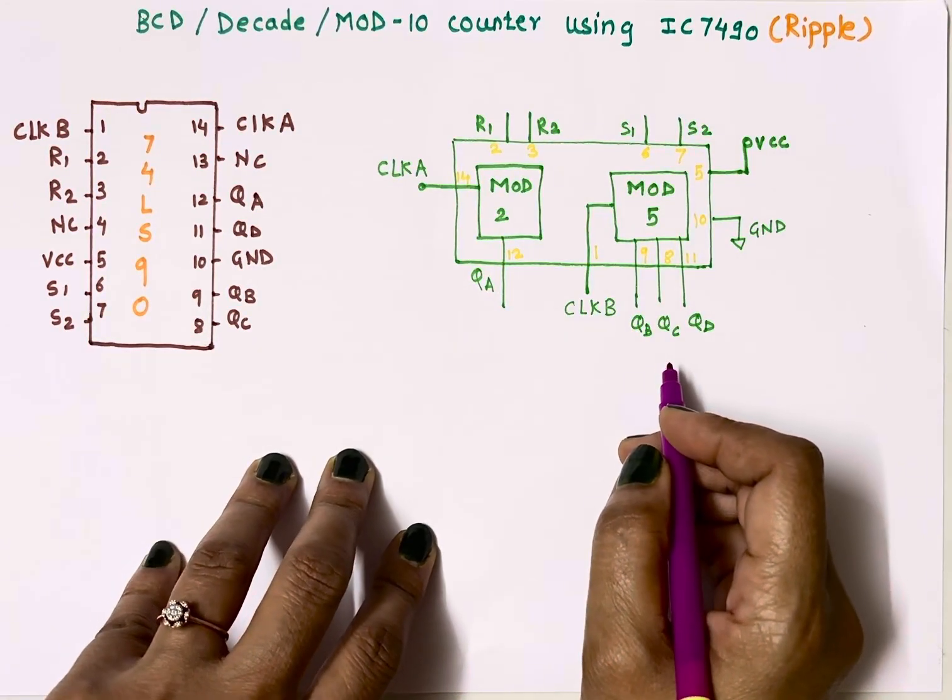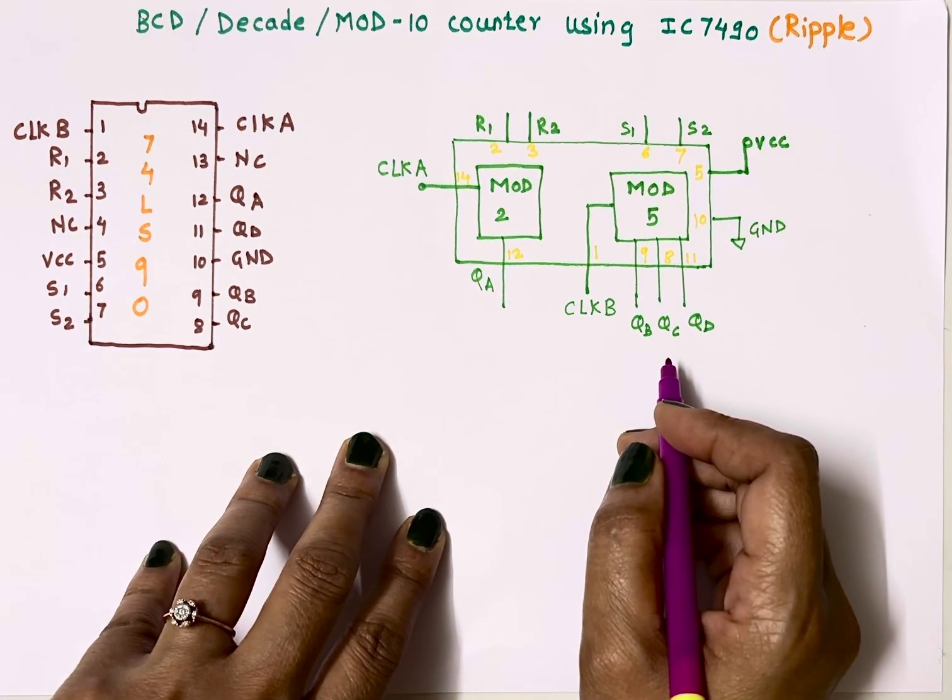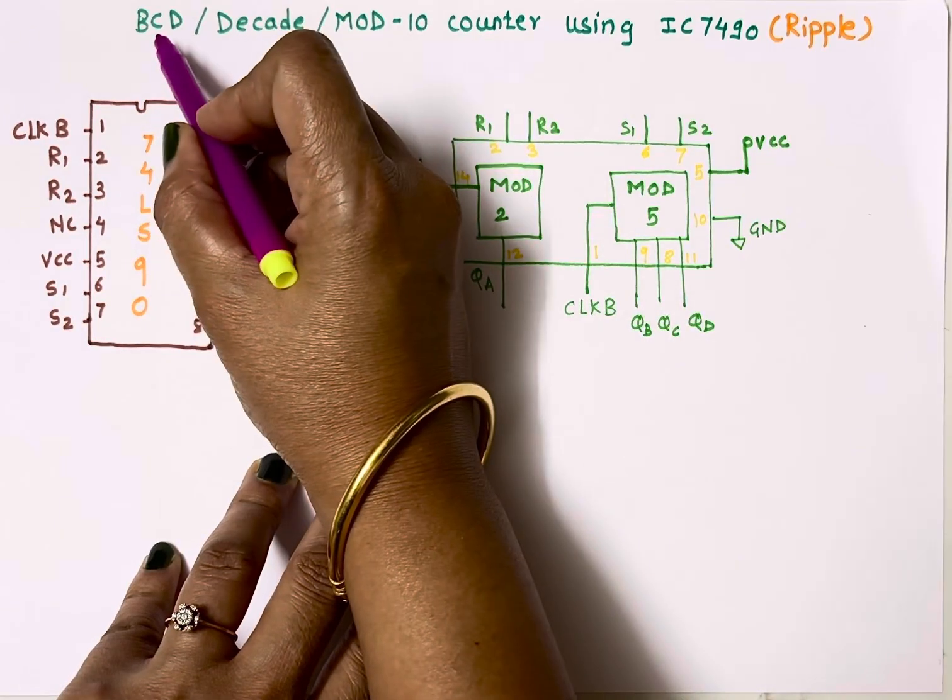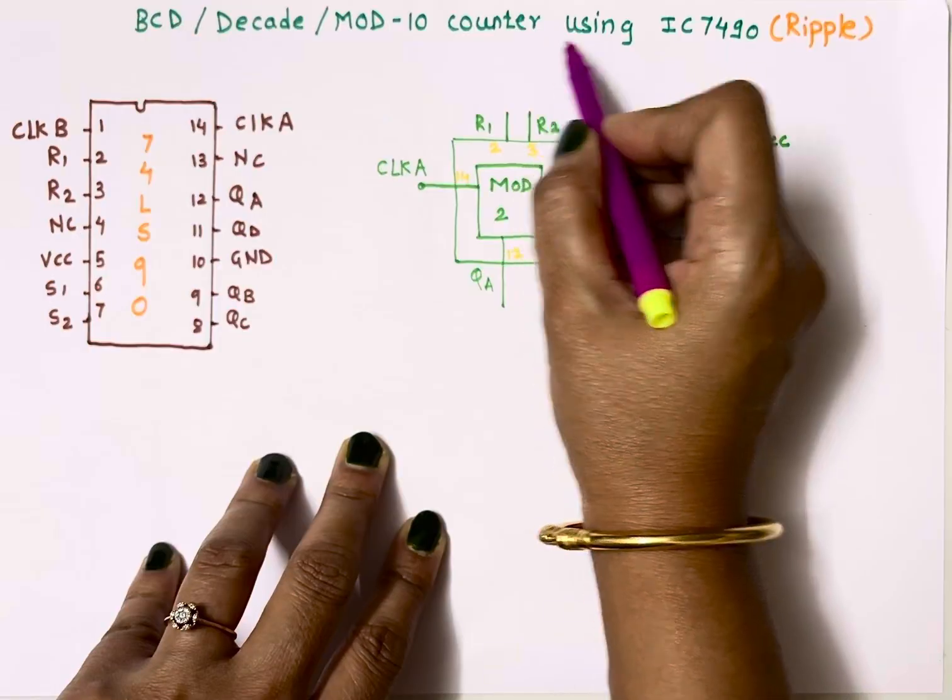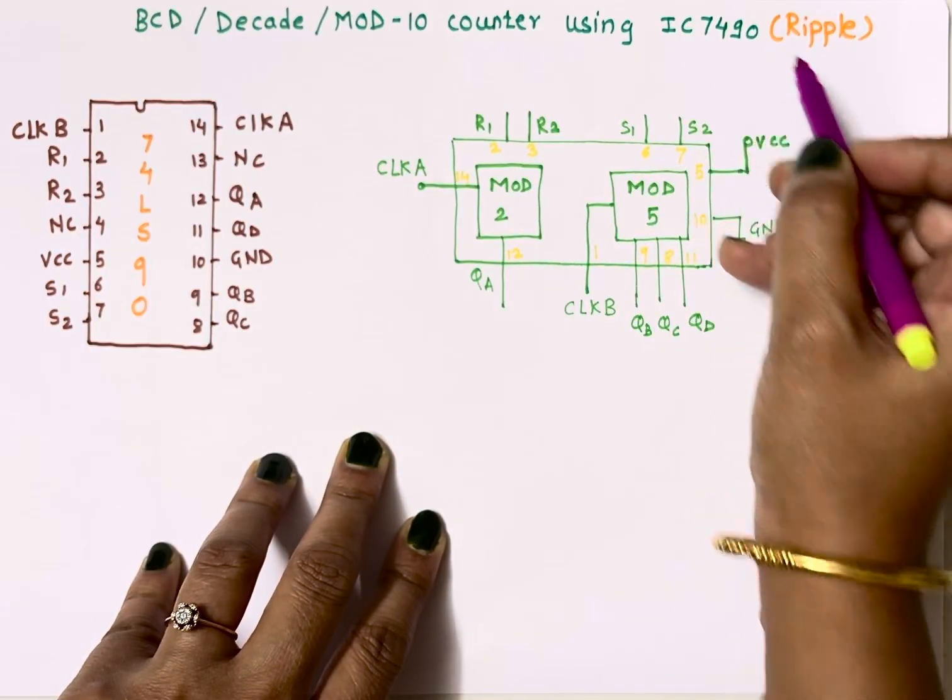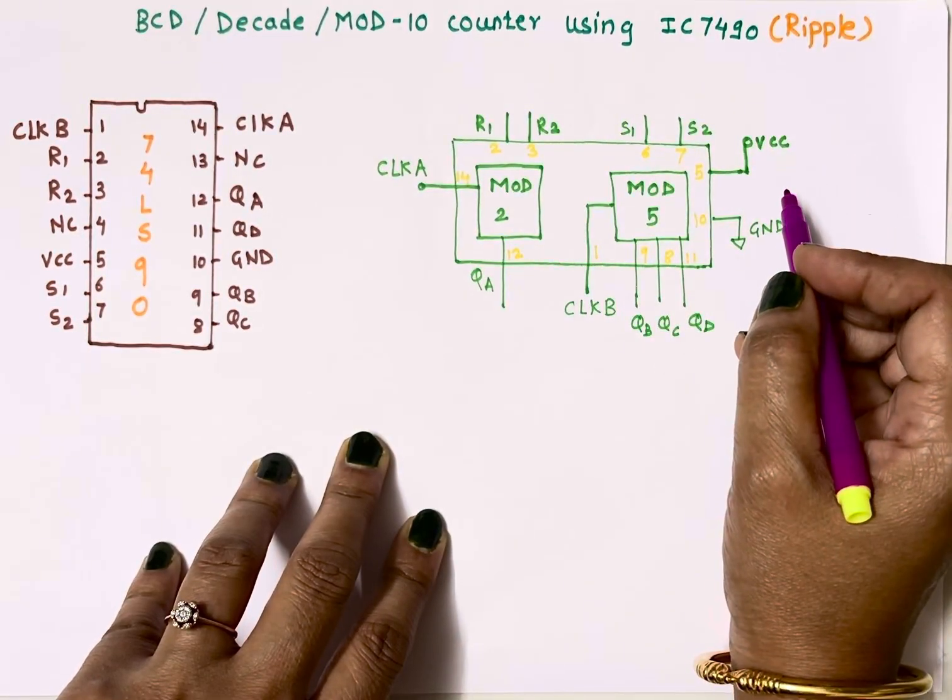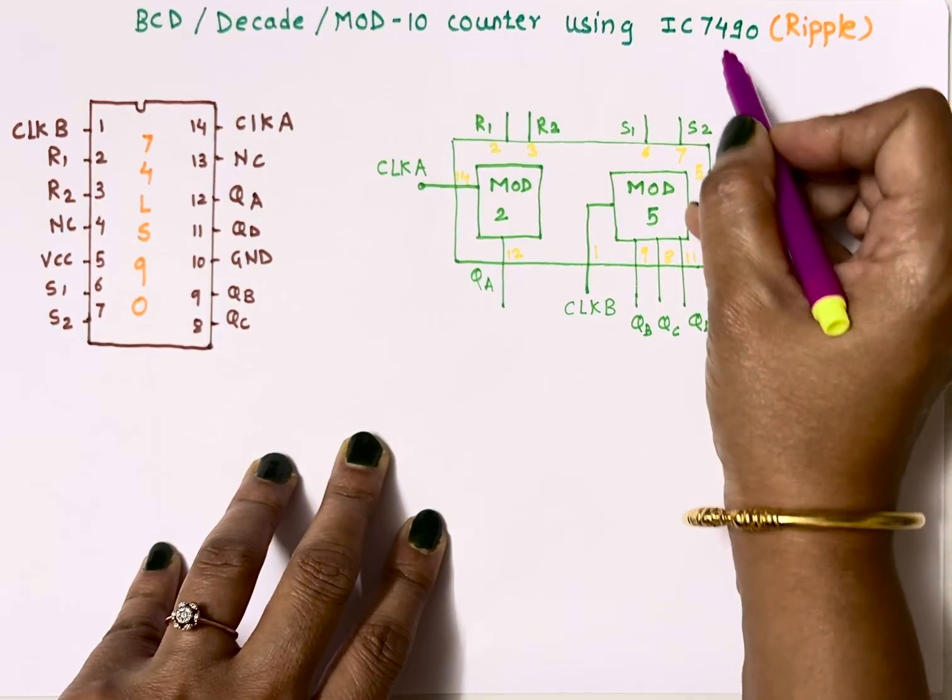Hello everyone, welcome back to my channel. In this video I'll tell you how to implement BCD counter or decade counter or mod-10 counter using IC7490. I'll also tell you how to implement mod-6 counter using IC7490.